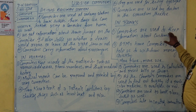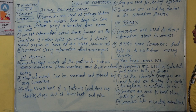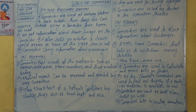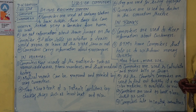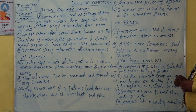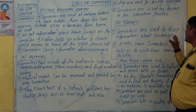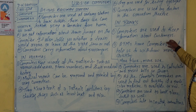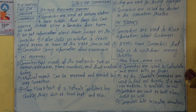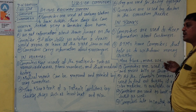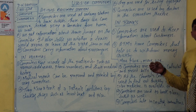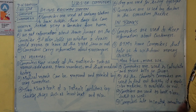In banks, computers are used to keep information about customers. Banks have a large number of customers, so all their information is stored in the computer, which has a very large memory and can store millions or crores of records. ATMs also have computers that help us withdraw money quickly.